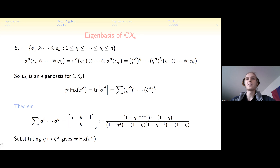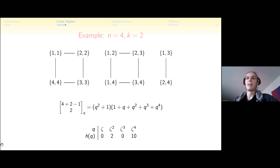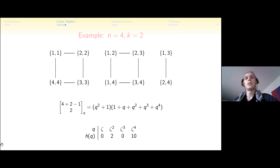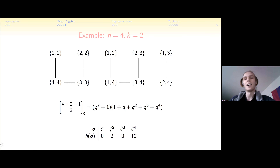Back to our example: we have a four-cycle and a two-cycle. Evaluating the q-binomial coefficient — expanding and cancelling terms — gives a polynomial. Zeta is the fourth root of unity, so we substitute powers of i. For sigma^1 we get i² + 1 = 0, so no fixed points. Substituting −1 gives 2, so two fixed points of sigma². Substituting 1 gives 10, so ten fixed points of sigma^4. And substituting zeta^100 = zeta^4 gives the same answer, using the cyclic nature of the roots of unity.